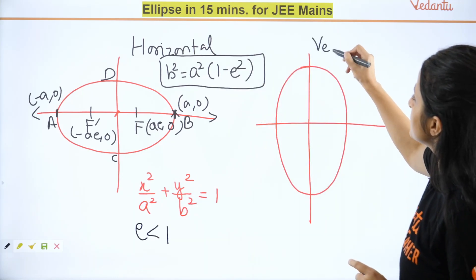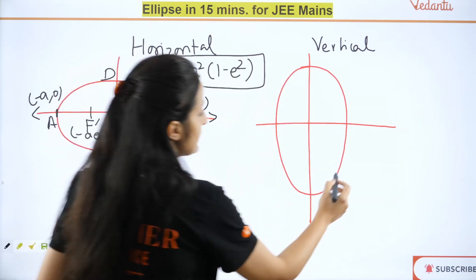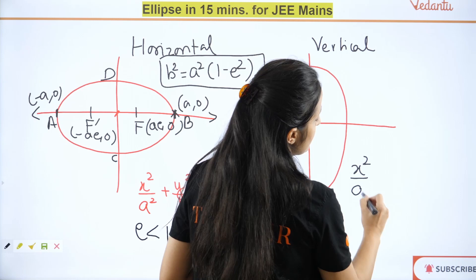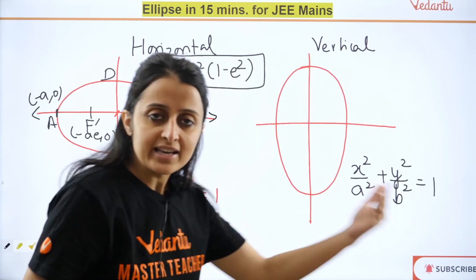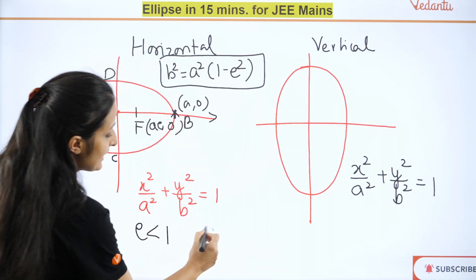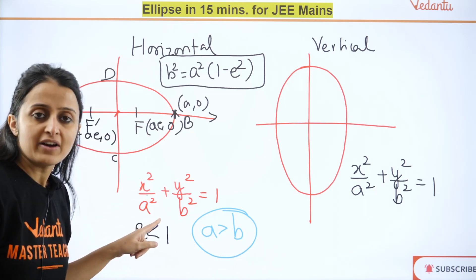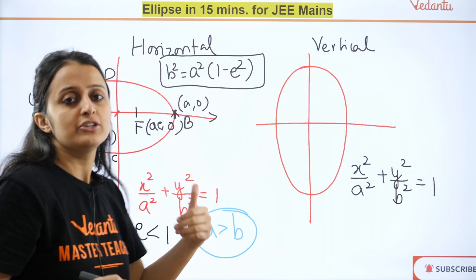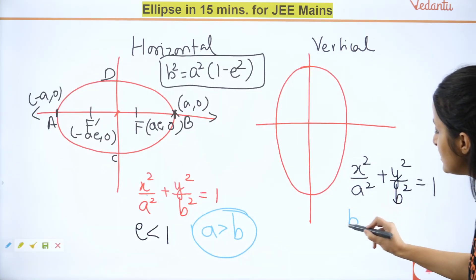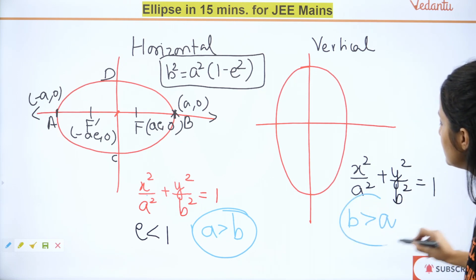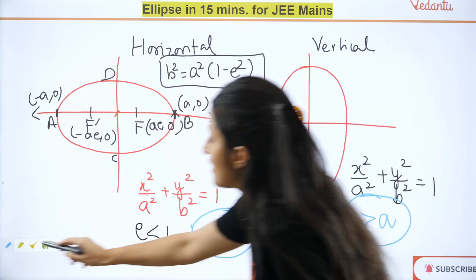Now talking about the vertical ellipse — I'll keep the equation the same: x²/a² + y²/b² = 1. How do you identify which type it is? If the value under x is bigger than under y (i.e., a > b), it's a horizontal ellipse. If the value under y is bigger, it's a vertical ellipse.